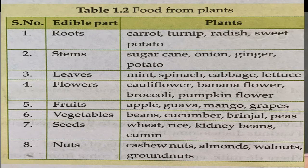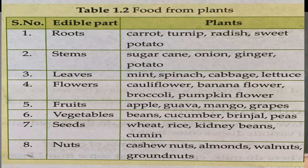The next part of the plant is flower. Can you guess which part of the plant — that is flower — can be eaten? Yes, cauliflower, banana flower, and pumpkin flower — this part of the plant we can eat as a flower.